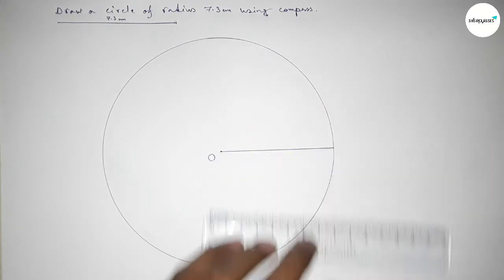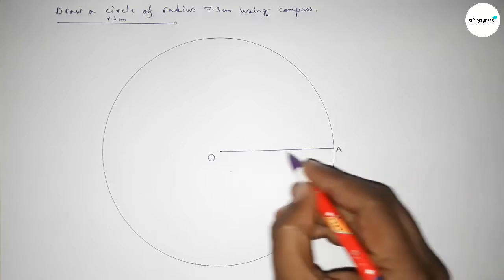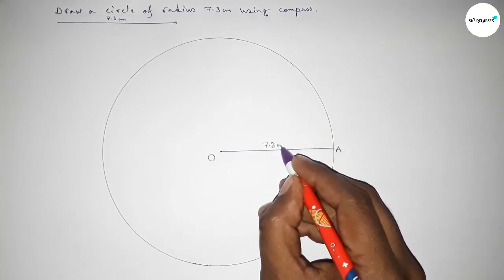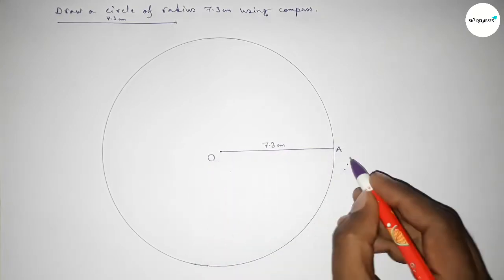This is the radius of this circle. Taking point A here, so OA equals 7.3 centimeters. Therefore, radius